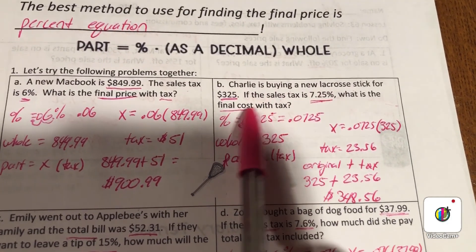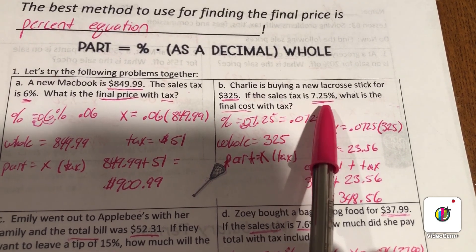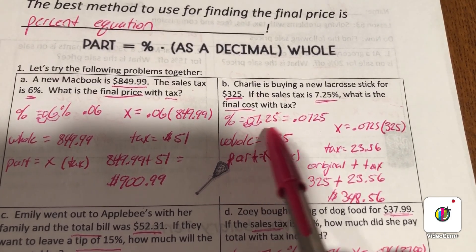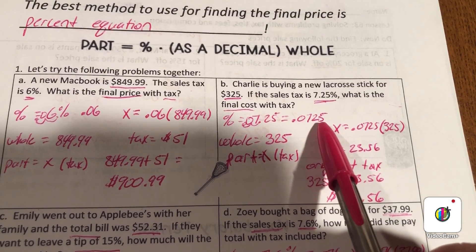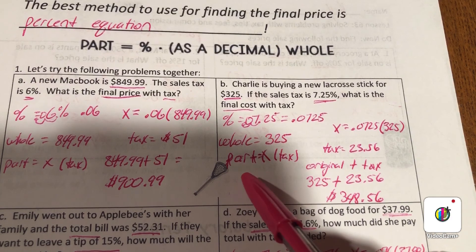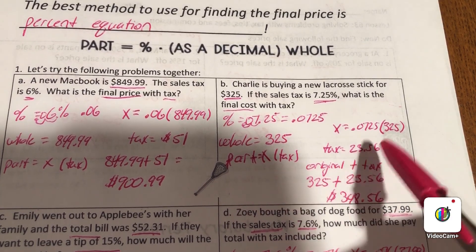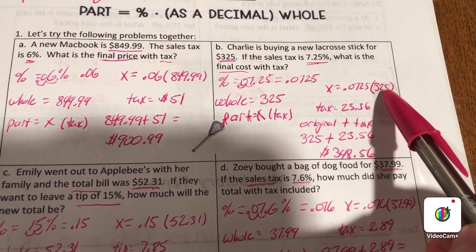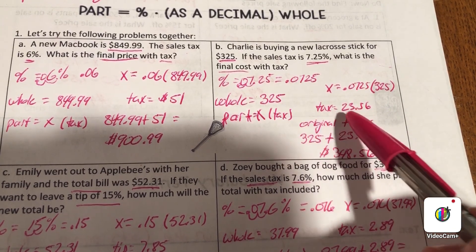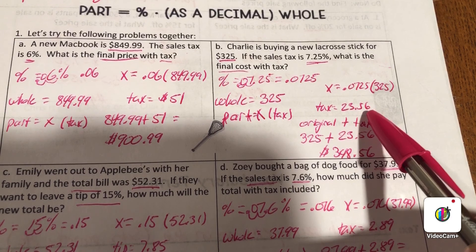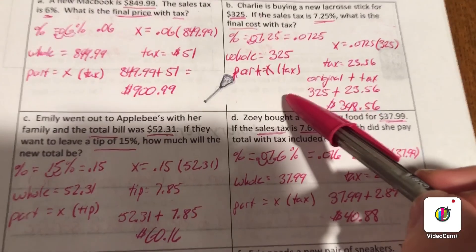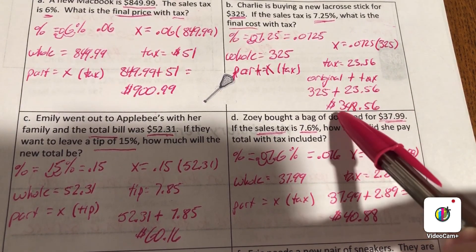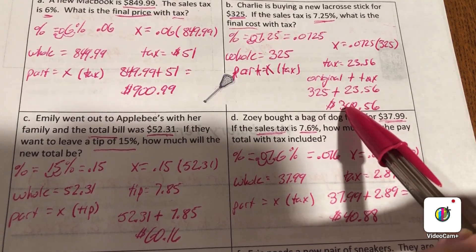Charlie's buying a new lacrosse stick for $325. If the sales tax is 7.25%, what is the final cost with tax? The percent as a decimal is 0.0725. The whole is $325, and the part is the tax we're looking for. Use that formula: 0.0725 times $325, and we'll get the tax of $23.56. Then I need to figure out the total amount, so it's the original $325 plus the tax $23.56, for a total of $348.56.